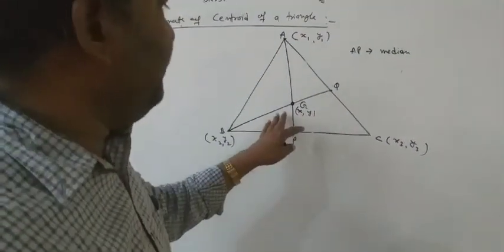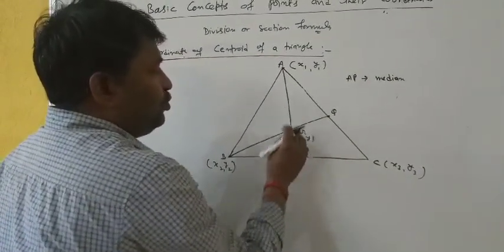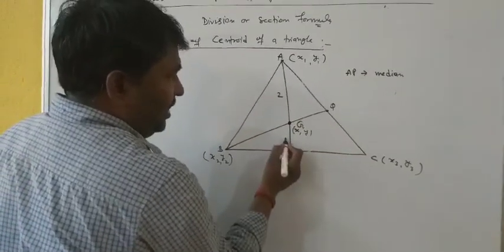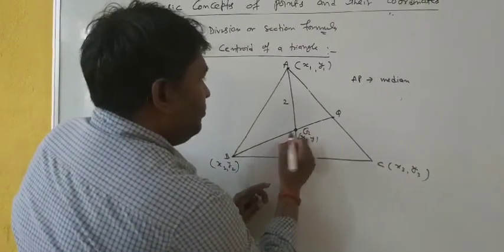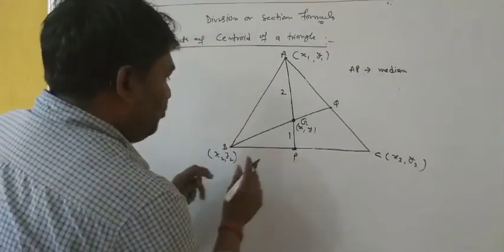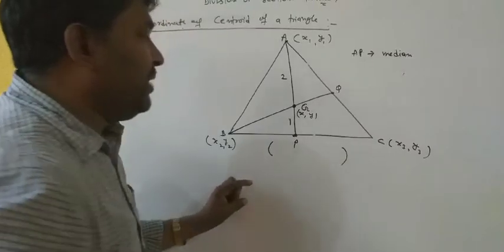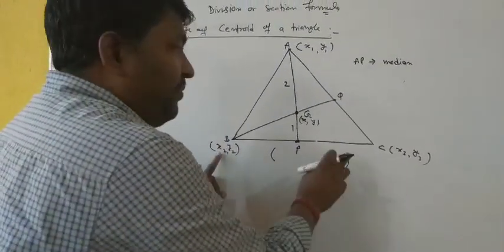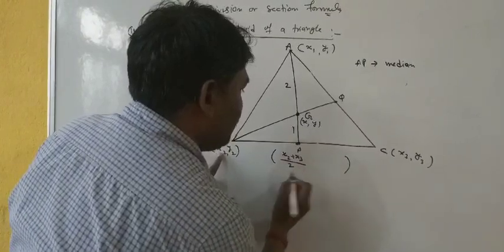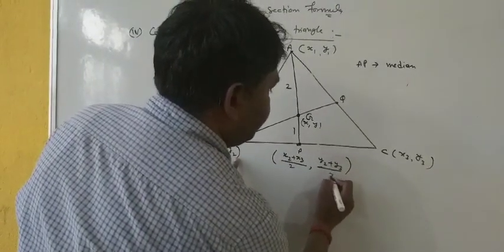According to the property of intersection of medians, the medians intersect each other in the ratio 2:1 — 2 parts along the vertex side and 1 part along the midpoint side. This is the midpoint P of BC, so by the midpoint formula its coordinate can be written as: x-coordinate = (x2 + x3)/2, y-coordinate = (y2 + y3)/2.